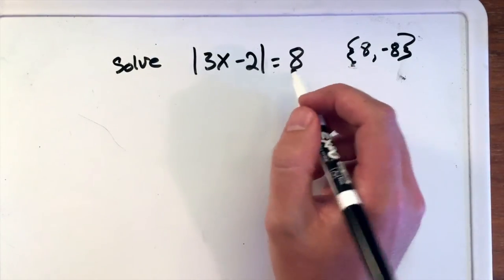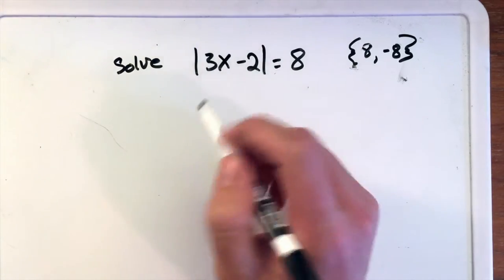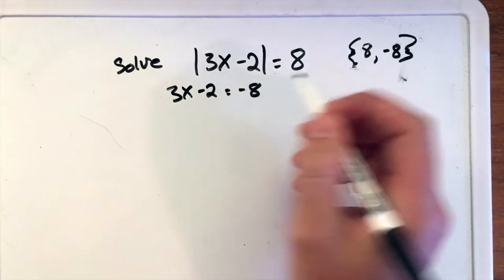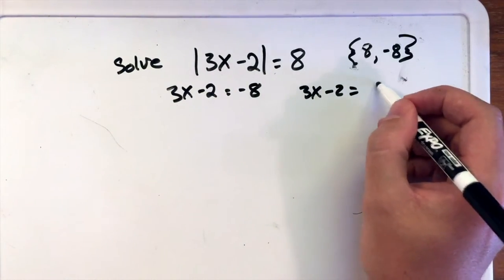So to solve this, we're going to set this expression—we're going to break it up to equal 8 as well as negative 8 to find the two x values. So 3x minus 2 equals negative 8, and as well as 3x minus 2 equals positive 8.